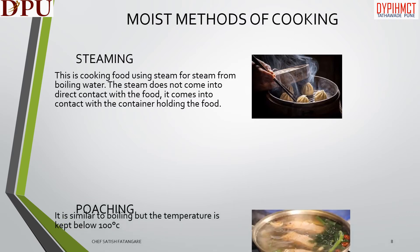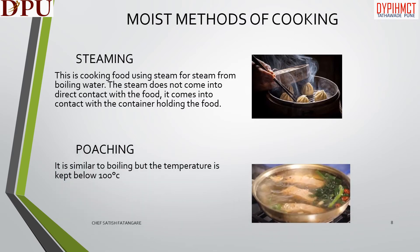Now we will discuss about the next cooking method, which is poaching. This is a moist method of cooking in which food is placed in liquid which is brought to and maintained at a temperature just under boiling point, which is 100 degrees Celsius.